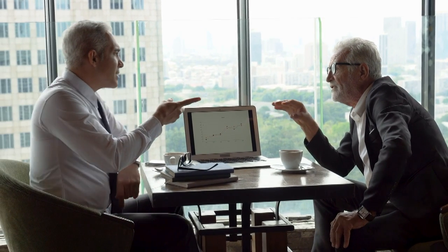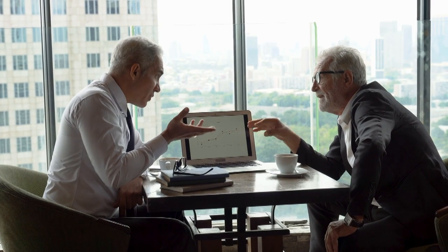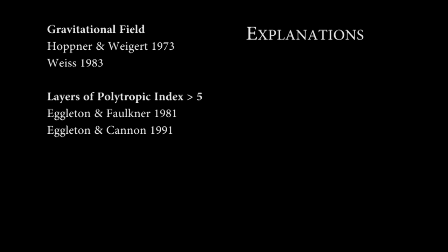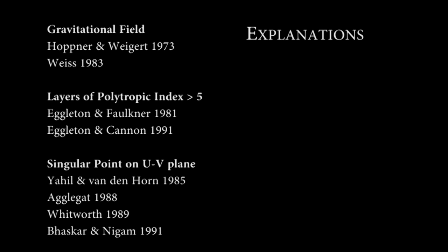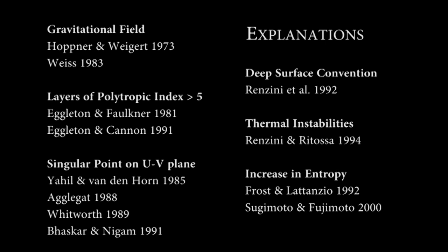But that's what everyone's arguing about, not the simulations. Just to show you how contentious this debate is, let me give you some of the explanations out there for why stars become red giants. It could be the increase in the gravitational field from the condensed core, or it could be from the shell's layer of polytropic index greater than five, or the singular point in the UV plane, or deep surface convection, or thermal instabilities, or rising entropy in the envelope. Which explanation is right? I have no idea.